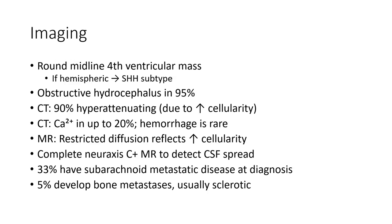Imaging: typically around the midline, fourth ventricle. If hemispheric, it increases in the SHH subtype. Obstructive hydrocephalus occurs in 95% of cases. CT shows hyperdensity in 90% of cases. Calcification is seen in up to 20%. Hemorrhage is rare.